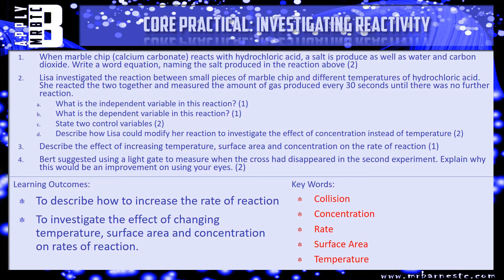Use that to write your word equation. You'll get one mark for the name of the salt and one mark for the rest of the word equation being correct. Question two: Lisa investigated the reaction between small pieces of marble chip and different temperatures of hydrochloric acid. She reacted the two together and measured the amount of gas produced every 30 seconds until there was no further reaction. Part A: what is the independent variable - the thing that you change? Part B: what is the dependent variable - the thing you measure? Part C: state two control variables, two things that you keep the same. And Part D: describe how Lisa could modify her reaction to investigate the effect of concentration instead of temperature. That's worth two marks, so you need two things in there.